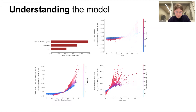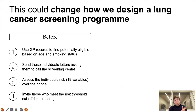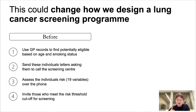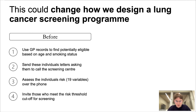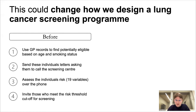Why is this important? With this kind of model we could really change how we design a lung cancer screening program. Currently in the UK, we trawl GP records to find people potentially eligible based on their age and smoking status, send them letters asking them to call a screening center, and those who call get their individual risk assessed using two different risk models — 19 variables, taking about 10 minutes per person. This has problems: smoking status is notoriously unreliable in electronic health records, and by sending letters we probably reach more health-motivated people, missing those who really need it.